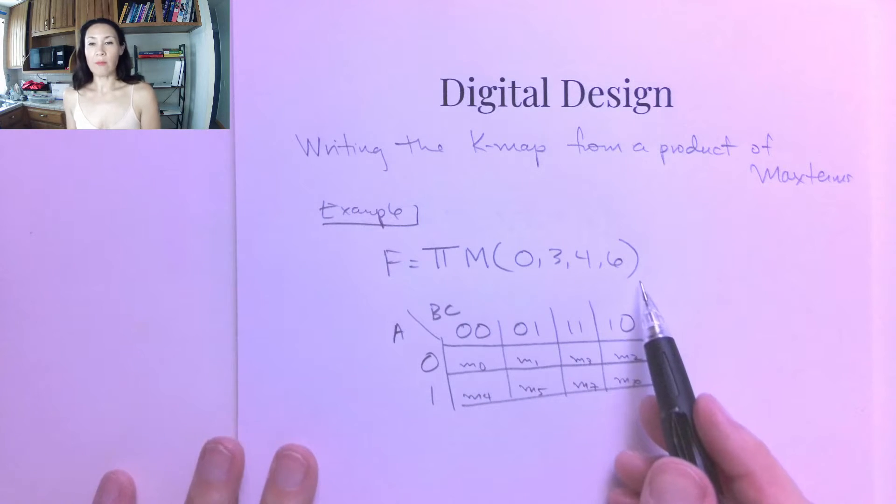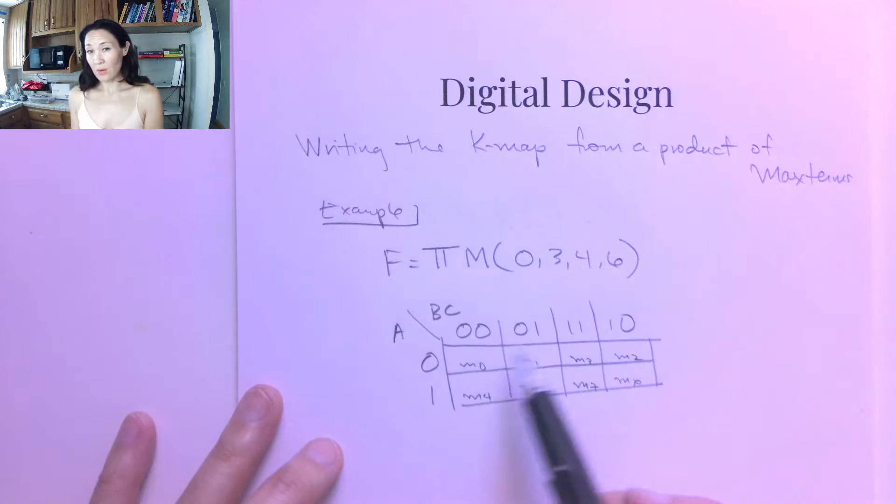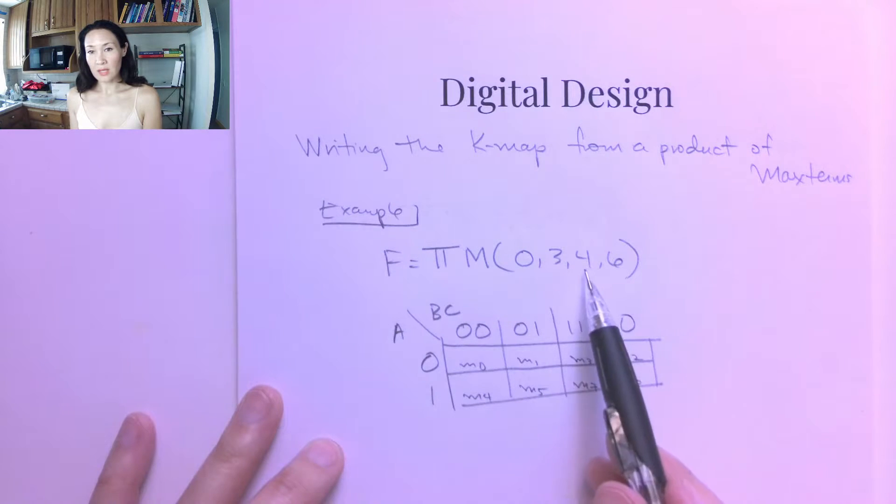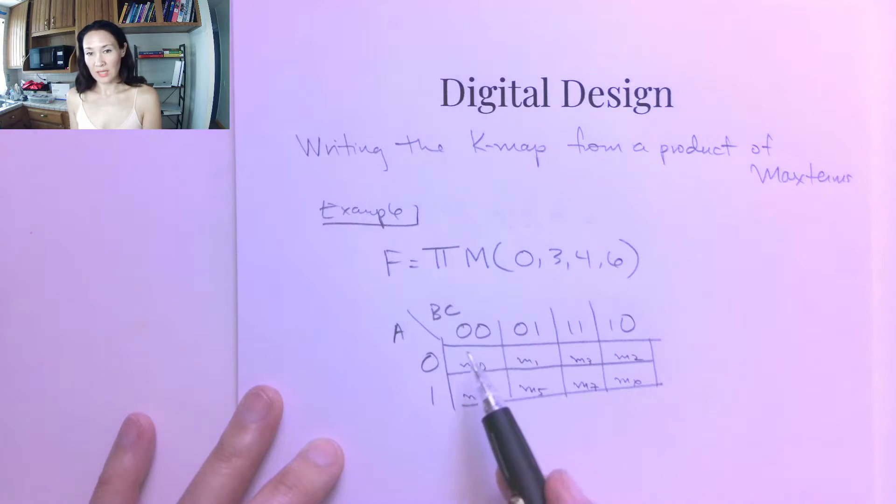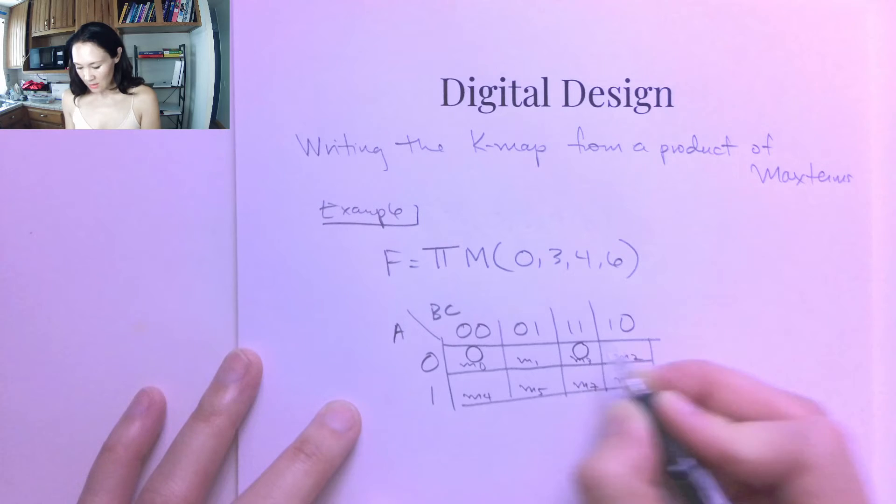So we have here a list of max-terms. So this is going to be where f equals zero. So instead of filling in the table with ones, we're going to use these locations to put in the zeros. So we're going to have a 0 here, a 0 at 3, a 0 at 4, and a 0 at 6.